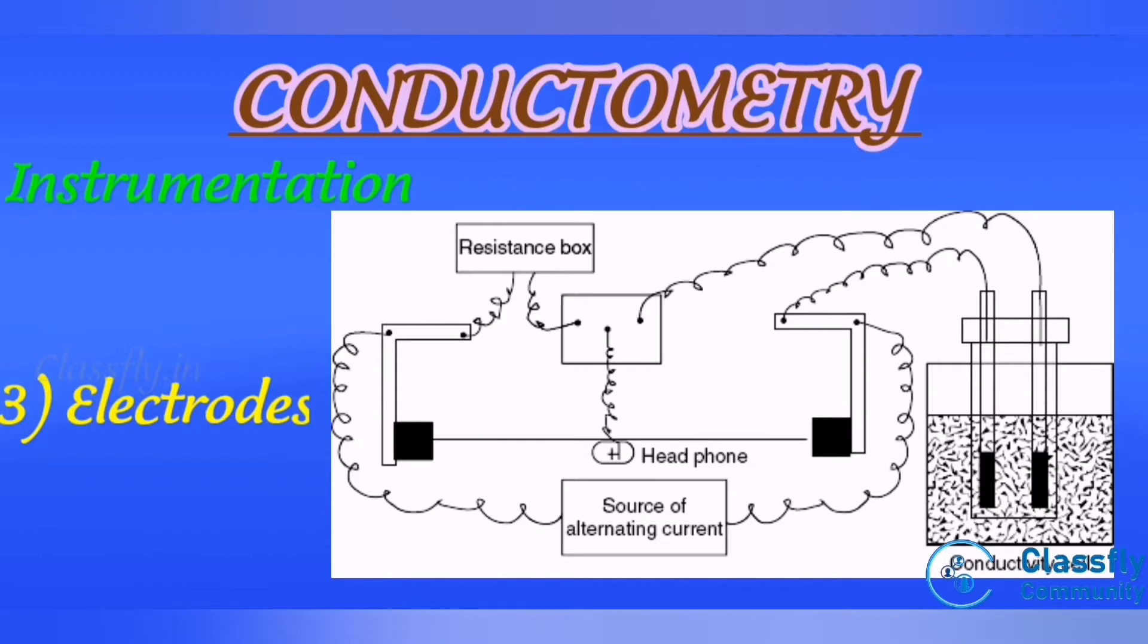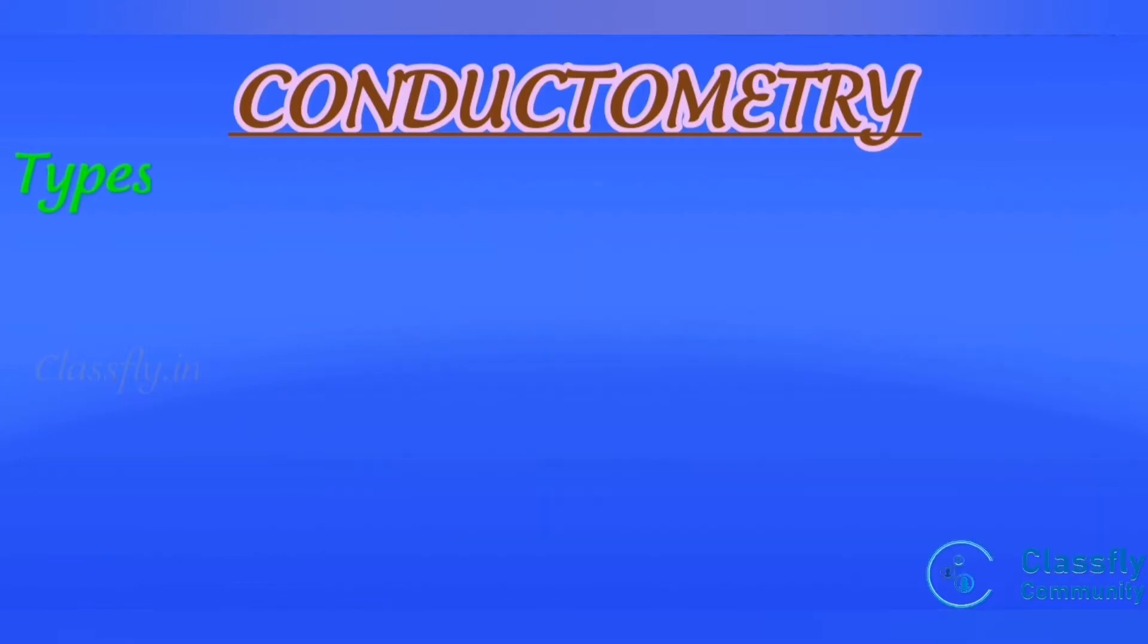Platinization of an electrode is done by coating solution of 3% chloroplatinic acid and lead acetate on it to get uniform coating. The electrode usage depends on the conductivity and concentration.